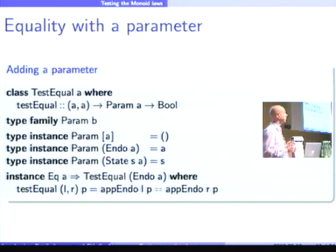So, to compare values of list types, I don't need any extra arguments. I can directly compare them. But if I want to compare functions, I need an argument to run the function on to compare the results. So, the parameter for Endo a is the a value.